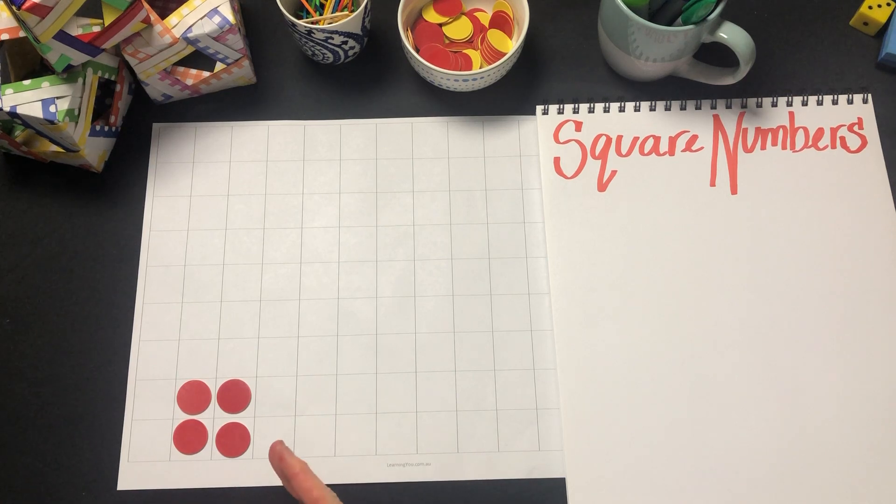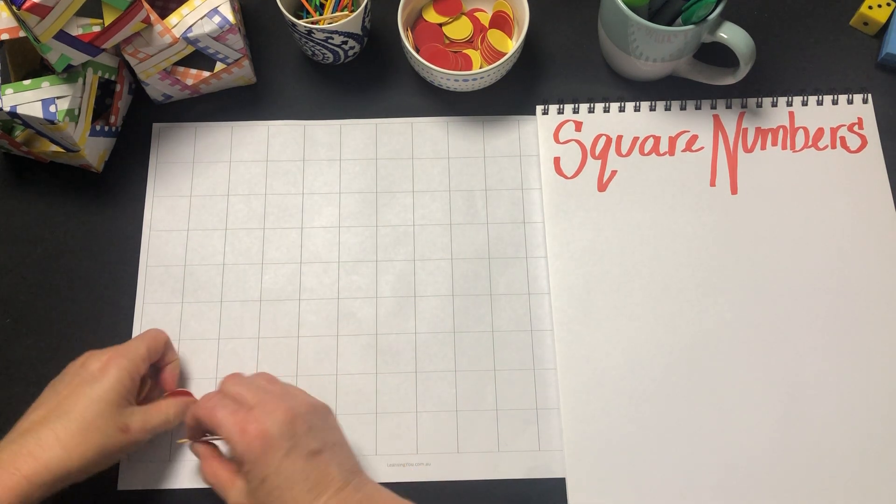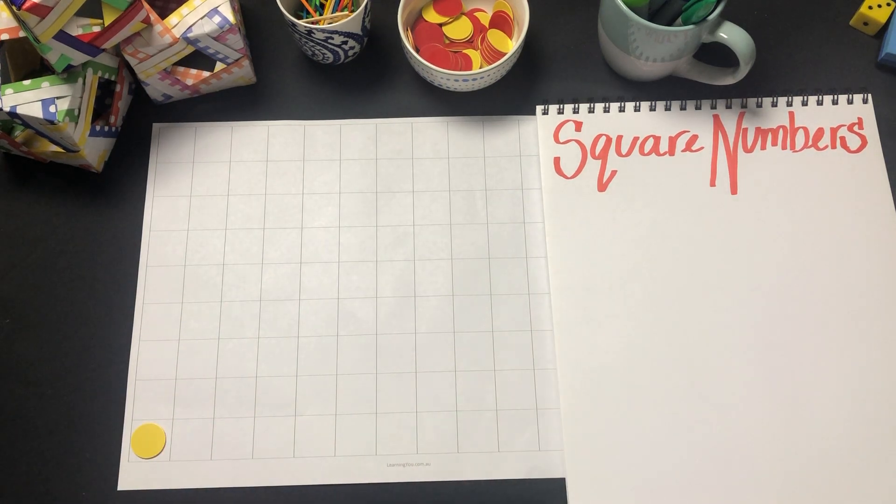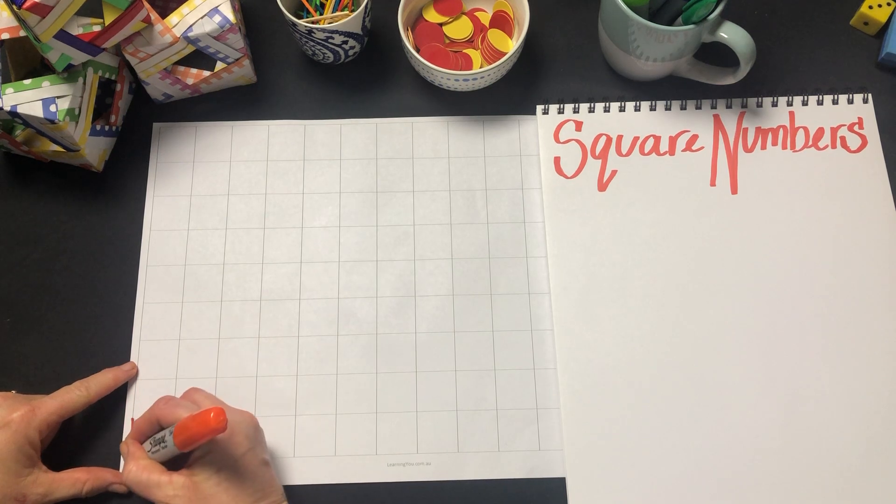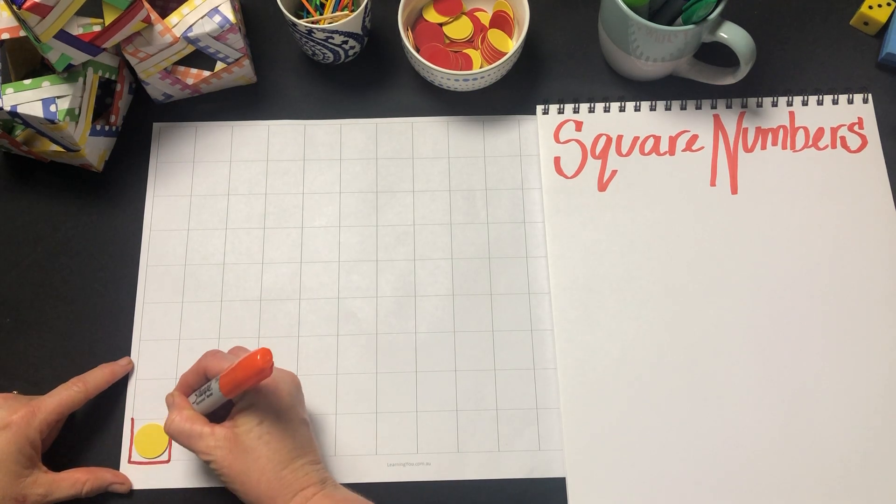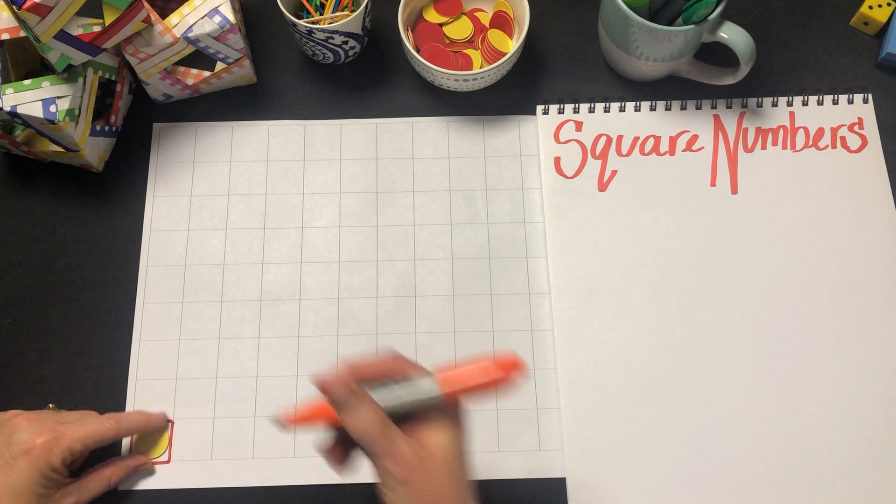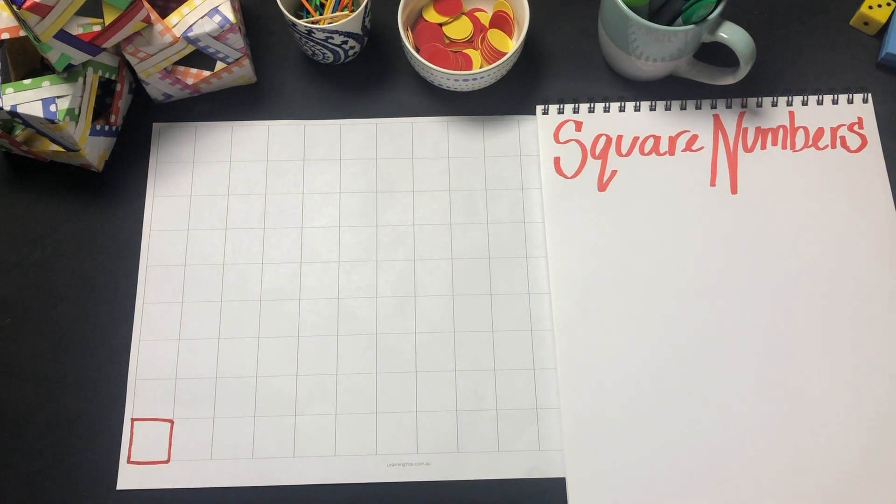So let's go through the sequence of our square numbers one by one. First of all, 1 is a square number. We can see that it has a side of 1 and its area in fact is 1.